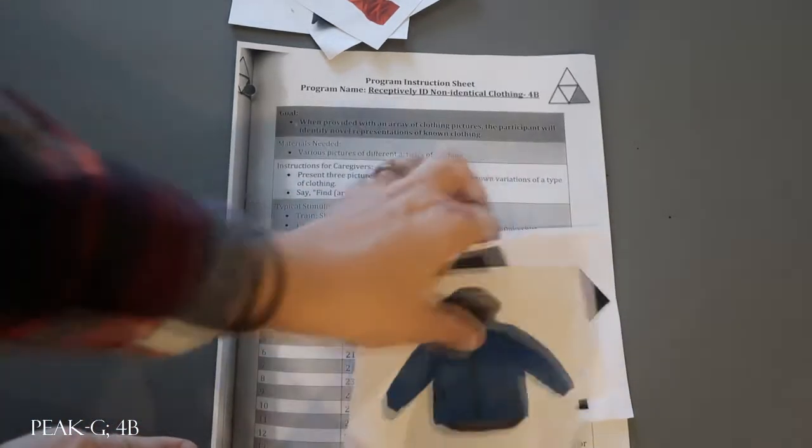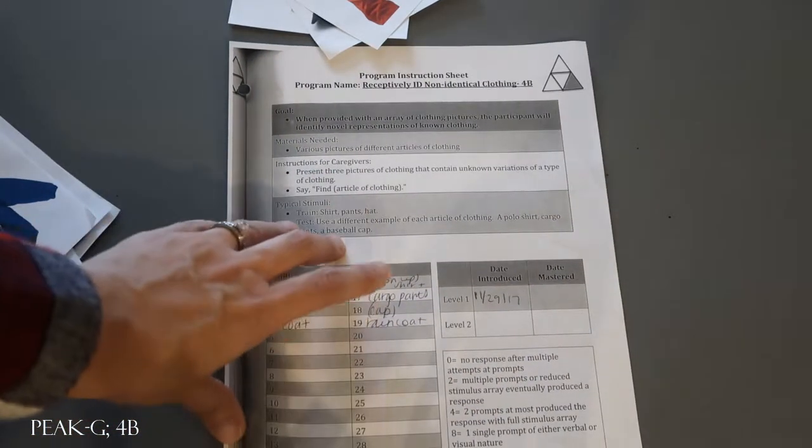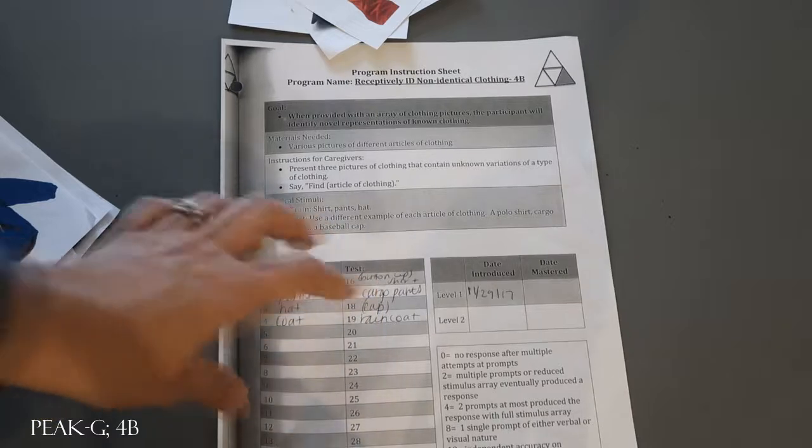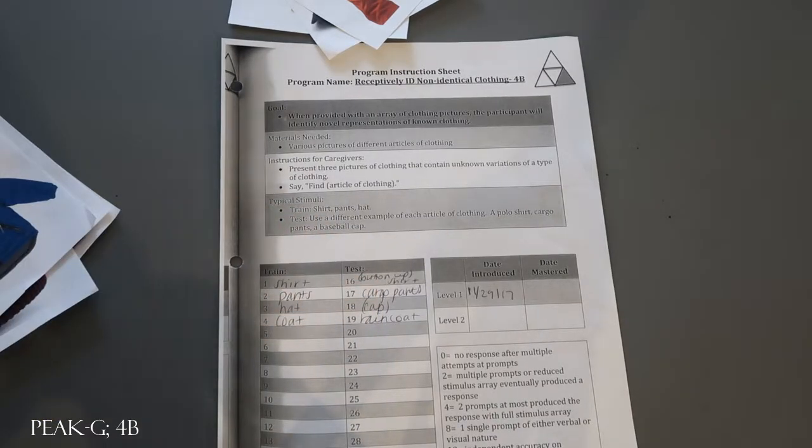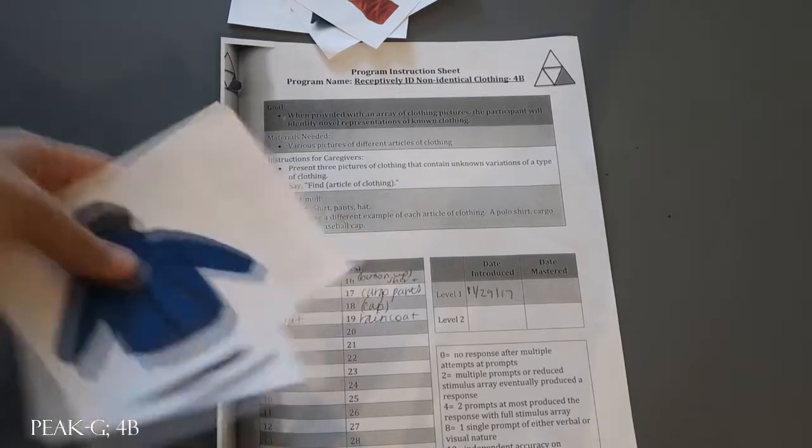It's important that you only put out train stimuli when you're doing a train target because you don't want to end up inadvertently prompting, reinforcing, or giving any praise on the test side when you shouldn't be. So when you're targeting something on the train only use the train stimuli in the field.